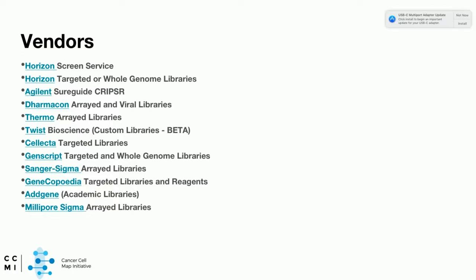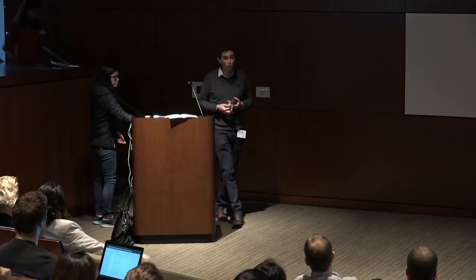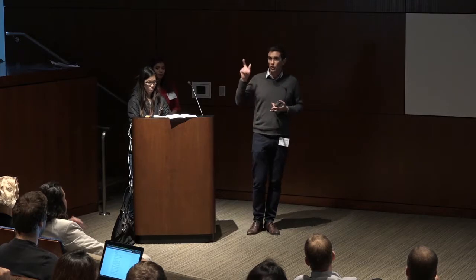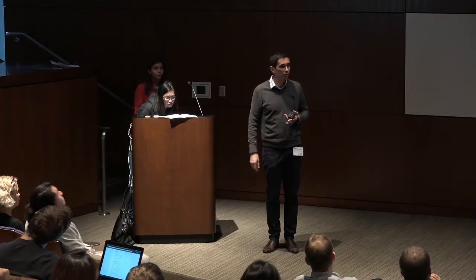We have a number of vendors available outside to discuss their products, including RAID libraries, CRISPR libraries, pooled libraries, and other reagents. Towards the end of the workshop — and you need to be here to win — we're going to raffle two reagent prizes: one from Agilent, the Show Vector CRISPR Library Cloning Kit, and another from Illumina, the NextEra DNA Flex Library Prep Kit. Without further ado, I'm going to hand it to Anna to walk you through the first step of the wet lab. We'll take a few questions — let's make it more interactive than last year.